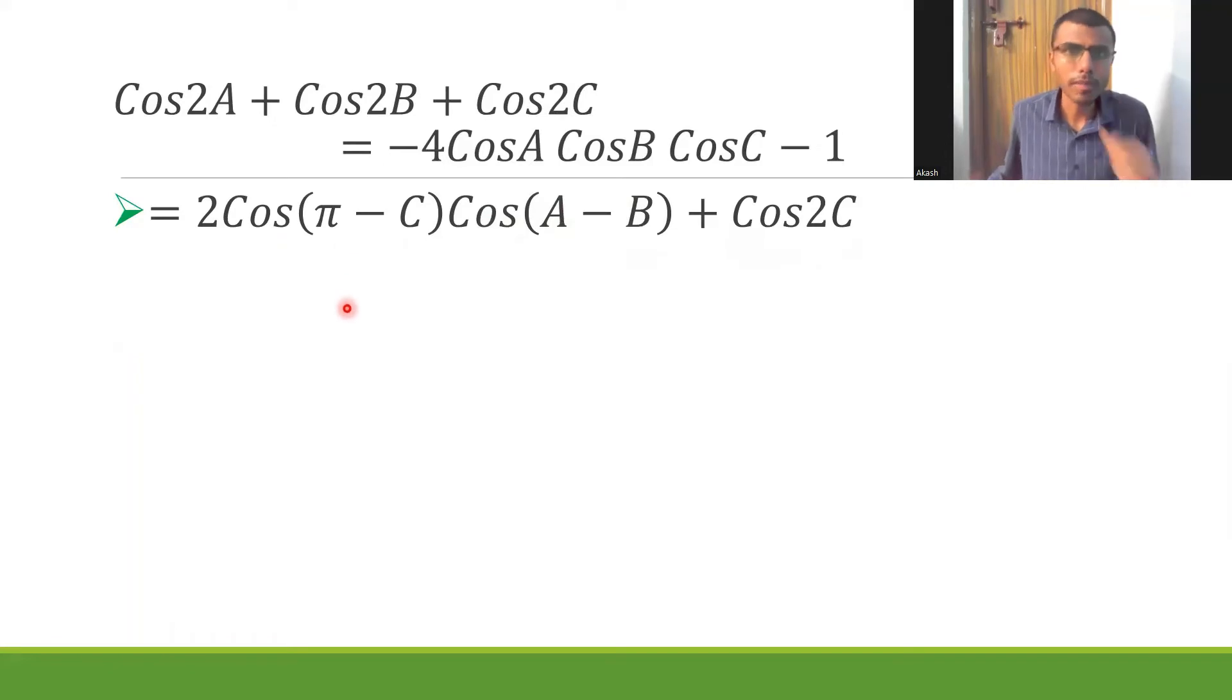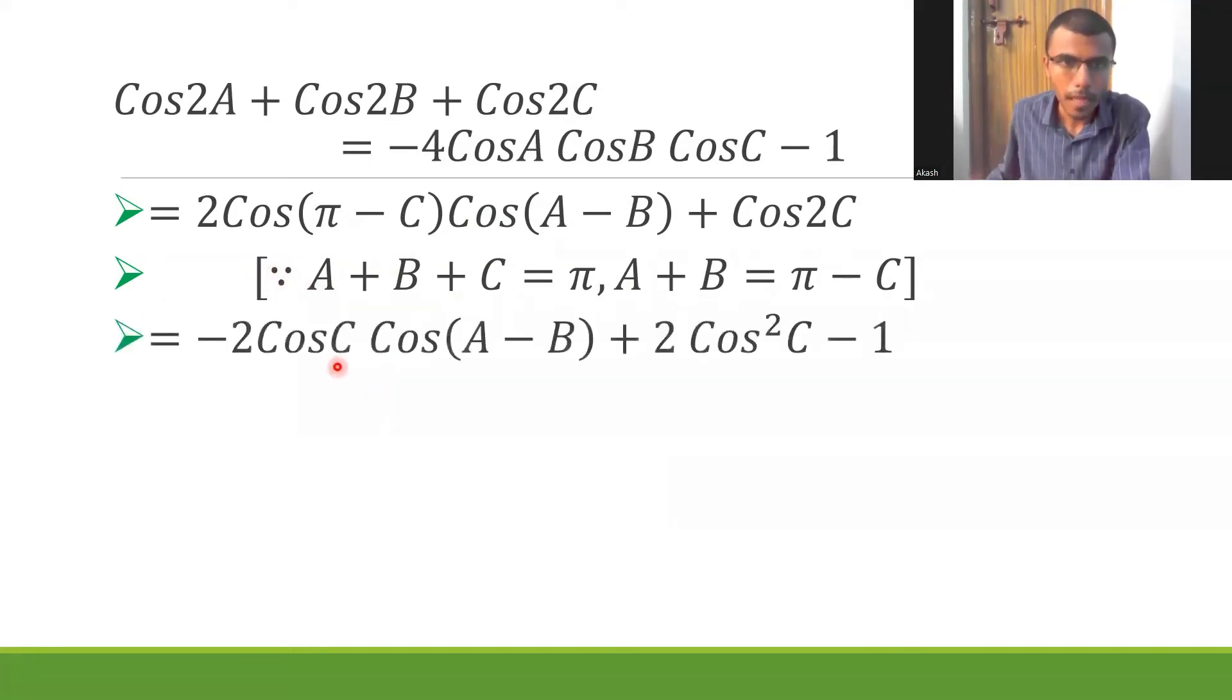Now what's cos(π - θ)? -cosθ. So basically here I have -2cosC. Again, don't forget to write this reason, that why did you substitute A+B with π - C? This is the reason. Whenever you come across such steps, either put it to the side of it or just under it, like how I've shown it to you, leaving some space in the beginning.